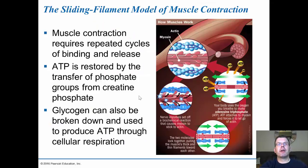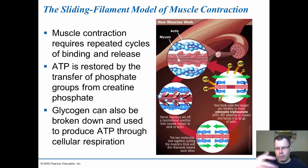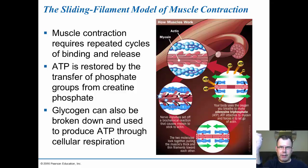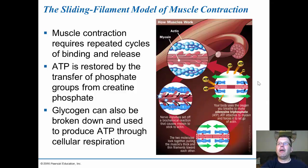Muscle contraction requires repeated cycles of binding and releasing. ATP is restored by phosphate groups created from creatine phosphate, and glycogen can also be broken down to produce ATP through cell respiration. We have quick and slow twitch muscle fibers, which depends on what type of cellular reactions produce ATP. In the resting state, myosin is in the low-energy configuration. Nerve impulses cause ATP to fall off, going to the high-energy state which grabs onto the actin filaments, causing sliding and contraction. Release is due to new ATP going back onto the myosin head, causing relaxation.